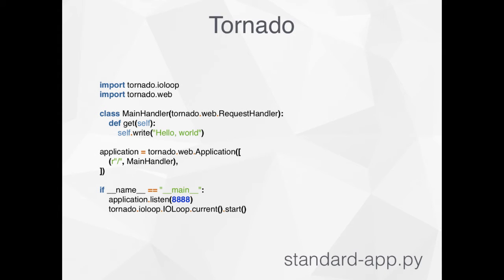This is the easiest Tornado app you could ever write. At the top we just import Tornado. We write a class that's our handler to handle web requests as they come in. When we create our application variable — tornado.web.Application — we also pass a map between the URL endpoints and the class that's going to handle them. And that's it. Then we start it in the name equals equals main portion of the code.